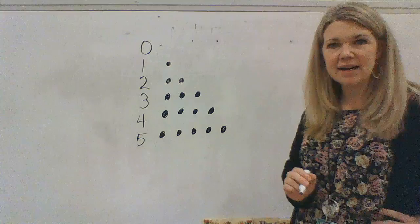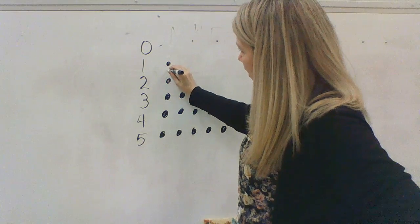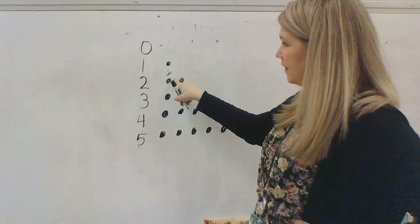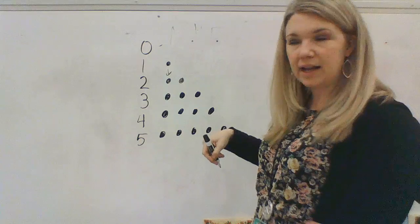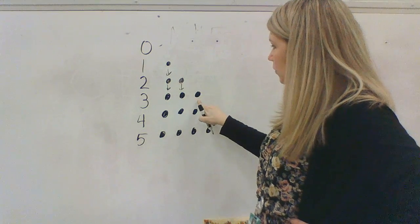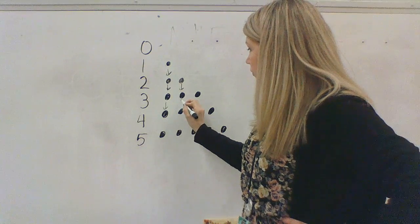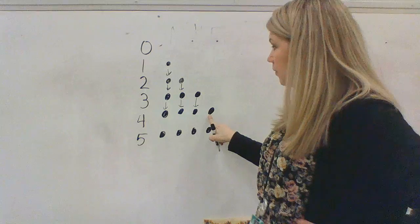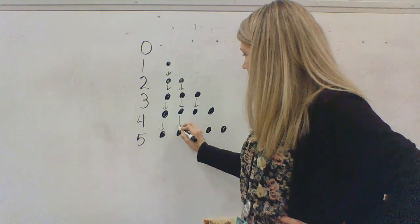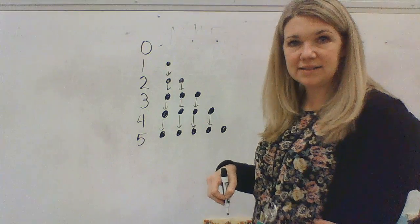Wow, look at that. Every time I have a number that's bigger — 1 more — I get 1 more. So there's zero, then one. Then that one drops down and I add one more and I have two. Then those drop down, I add one more and I have three. Then those three come down and I add one more and I have four. Then those drop down — four plus one is five.